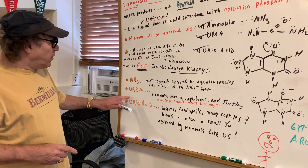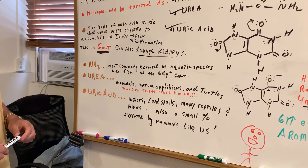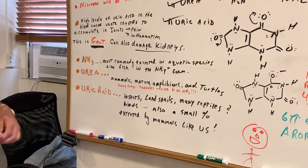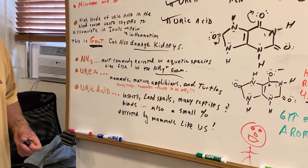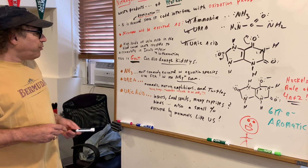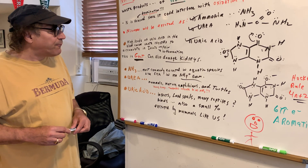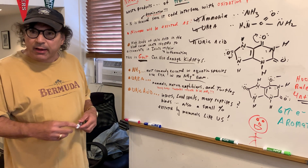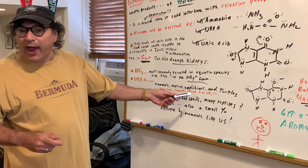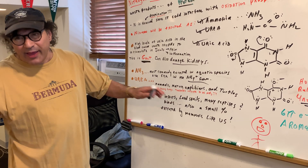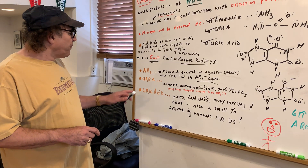NH3 is most commonly excreted in things like fish — think aquatic. When ammonia hits water, it comes off as NH4+. Urea is excreted in mammals like us, as well as mature amphibians and turtles. A young frog, like a tadpole, will excrete nitrogen as ammonia — just a fine point. But mammals, mature amphibians, and turtles use urea.